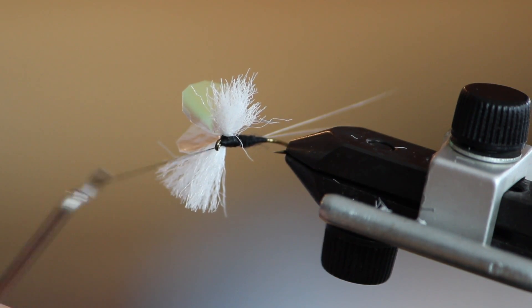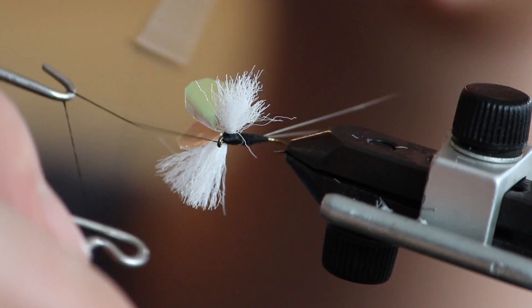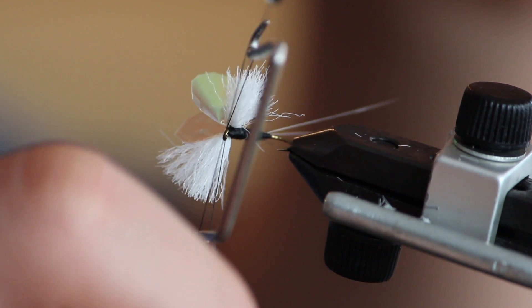You are now done with the main work of the spinner. Now you can whip finish. When whip finishing, be careful not to trap the fibers of the poly yarn.